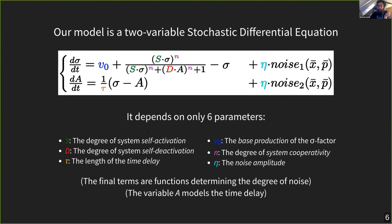Our model depends on only six parameters, and we're able to tie these parameters quite well to various biological functions or properties of the network. We have S, the degree of self-activation — how strongly the sigma factor activates its own production. We have D, the degree of self-deactivation. Tau is the length of the delay. V0 and n are slightly more abstract. And we have eta, the noise amplitude: for very small eta we have very little noise, and as eta grows large the system becomes noisier. We want to understand how the behaviors of the biological system depend on these different biological attributes.